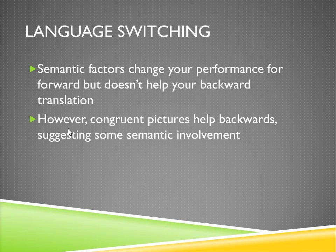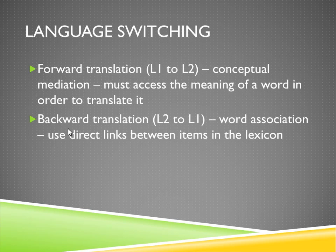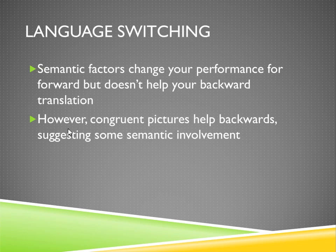There are lots of semantic factors that change performance for forward translation but don't help backward translation, which is why we think those processes differ. If you show people pictures — say a picture of a cat and ask for the English word, then a picture of a cat asking for the French word — congruent pictures help with backward translation. So there is some semantic involvement in both directions, but forward translation clearly requires the most access to semantics, while backward translation is more of a straight word association.